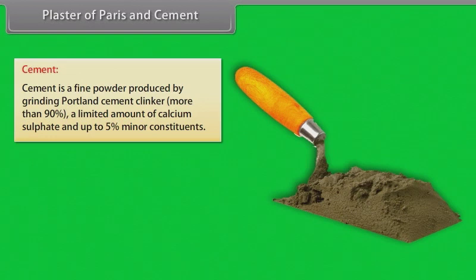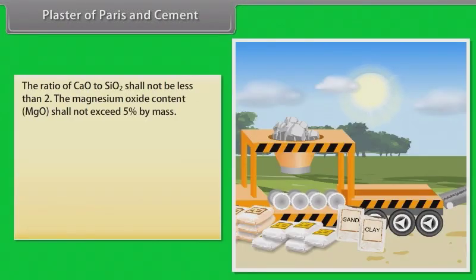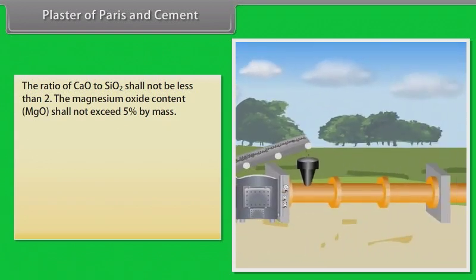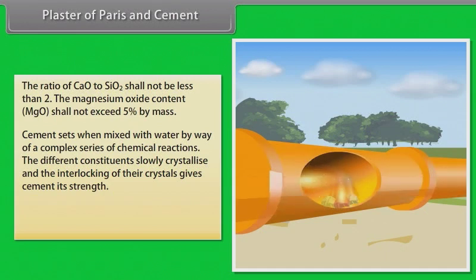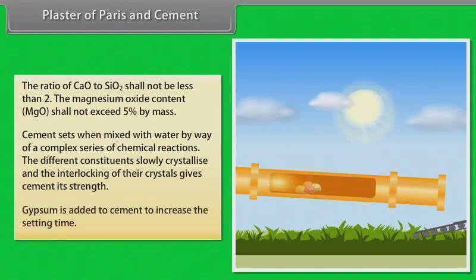Cement is a fine powder produced by grinding Portland cement clinker (more than 90%), a limited amount of calcium sulphate and up to 5% minor constituents. Portland cement clinker is a hydraulic material consisting of at least two-thirds by mass of calcium silicates. The remainder consists of aluminium and iron-containing clinker phases. The ratio of CaO to SiO₂ shall not be less than 2. The magnesium oxide content shall not exceed 5% by mass. Cement sets when mixed with water through a complex series of chemical reactions; the constituents slowly crystallize and the interlocking of their crystals gives cement its strength. Gypsum is added to cement to increase the setting time.